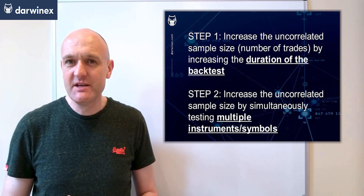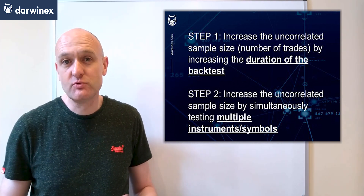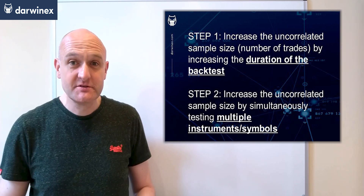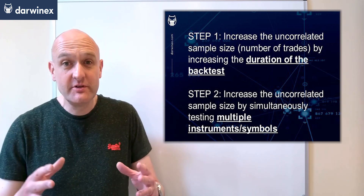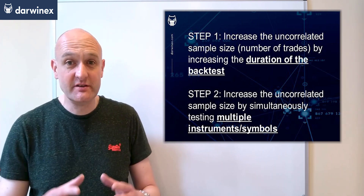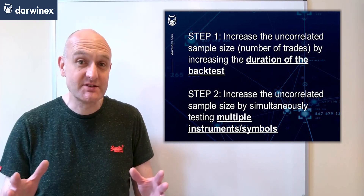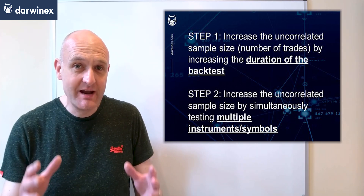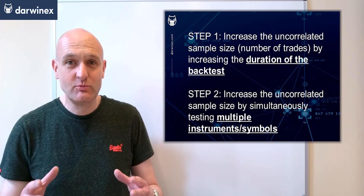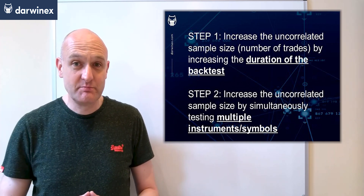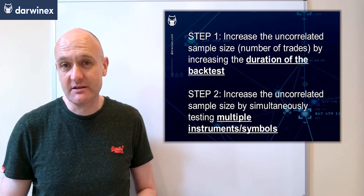If your system only appears to work on one instrument or symbol — for example it only performs well on GBPUSD but no others — then there's a really good chance it's overfitted to that data. If you've developed a generic system, tested on lots of instruments, but it only appeared to work on one, in our case GBPUSD, then the likelihood is that you have overfitted to the data of that instrument.